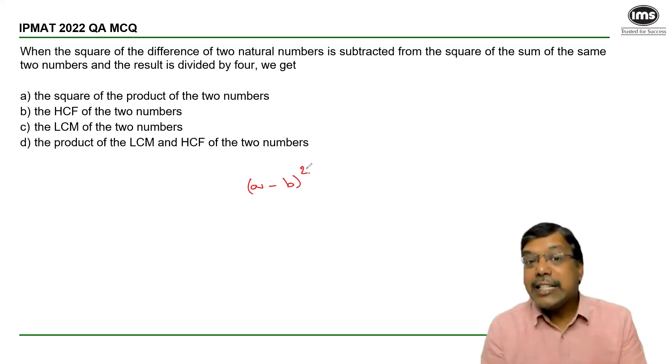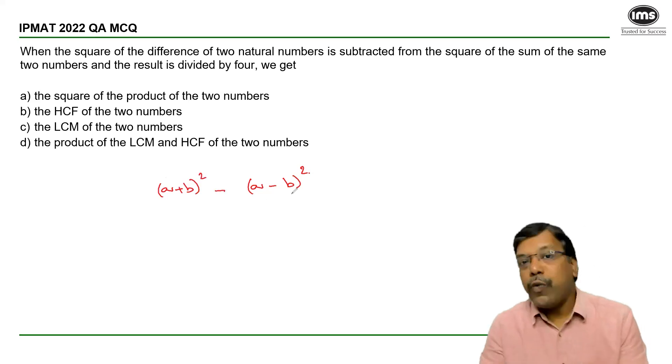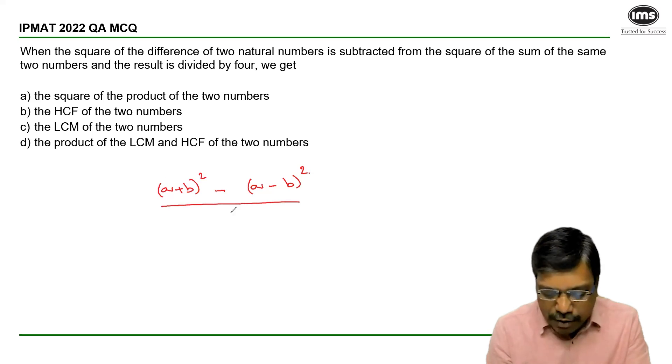This value is subtracted from the square of sum of the same two numbers. So square of sum of these numbers minus the square of difference of the numbers, and this result is divided by 4.